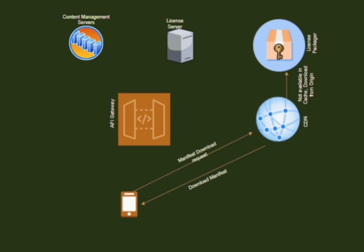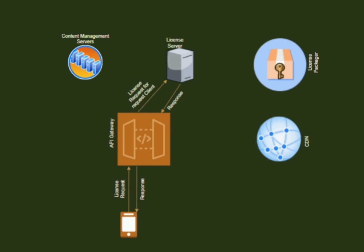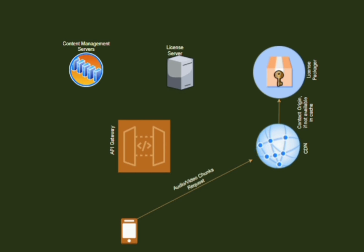The CDN also caches the manifest file for the next user. After receiving the manifest file, the OTT client device contacts the license server to get the license info. Finally, the client downloads the audio and video chunks listed in the manifest in order, and uses the encryption keys received from the license server to decrypt the content. The rest of the rendering is handled by the platform abstraction layer.